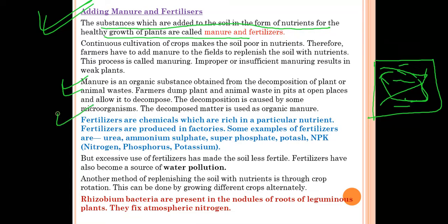Manures are not made from chemicals, so they do not create pollution. On the other hand, fertilizers are man-made chemicals produced in factories, rich in particular nutrients. They create soil pollution and water pollution. Examples of fertilizers are urea, ammonium sulfate, superphosphate, potash, and NPK — that is, Nitrogen (N), Phosphorus (P), and Potassium (K). Excessive use of fertilizers makes soil less fertile and can cause water pollution when rainwater washes them into water bodies.